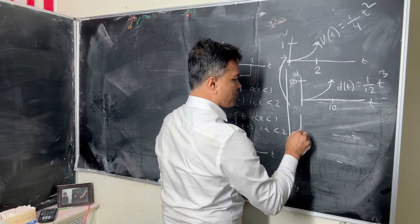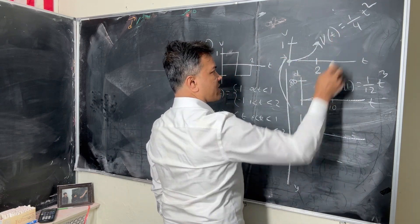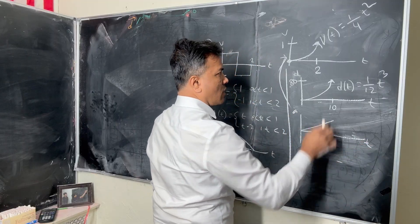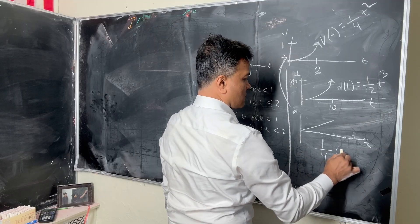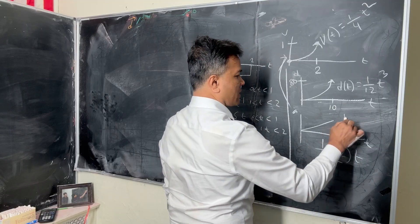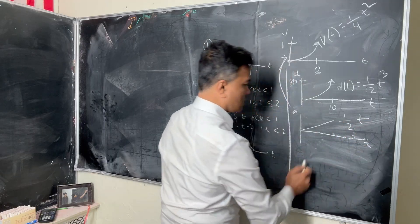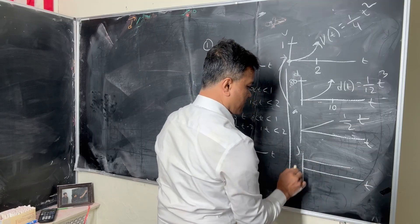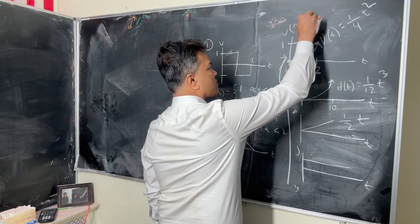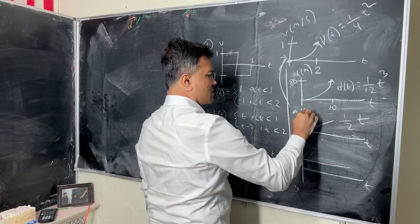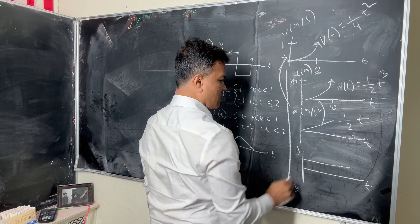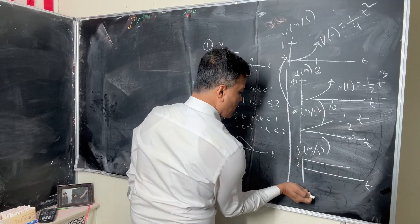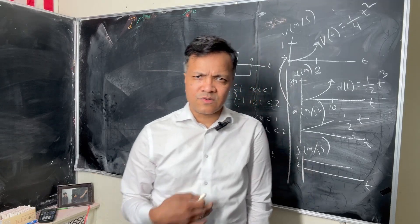If VT is quadratic, then AT would be linear. We're going to use the same procedure. This is 1 half T for acceleration. Then we're going to do jerk, and that is just half. This is meters per second for velocity, meters for displacement, meters per second squared for acceleration, and meters per second cubed for jerk. Now this is all our graphs.